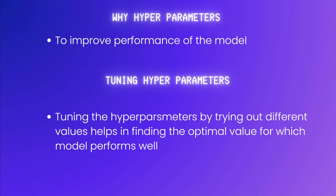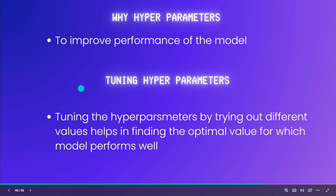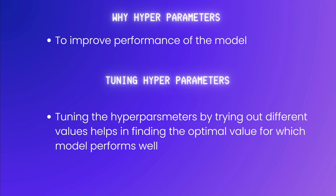Let's see what is the importance of these hyperparameters. The right choices can lead to a well-performing model, while poor choices might result in underfitting and overfitting. It's like adjusting the dials of a radio to get the perfect signal. To find the optimal configuration, we engage in hyperparameter tuning, which involves systematically trying different values. Imagine it as finding a perfect recipe with just the right amount of each ingredient.